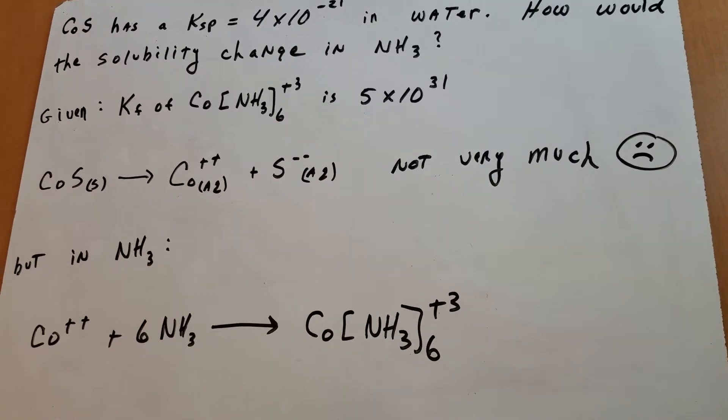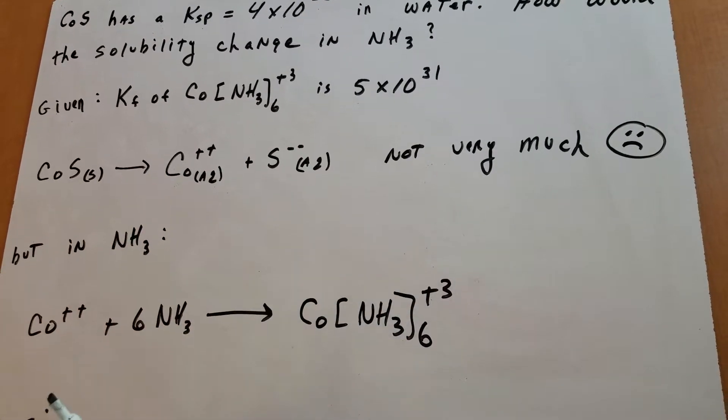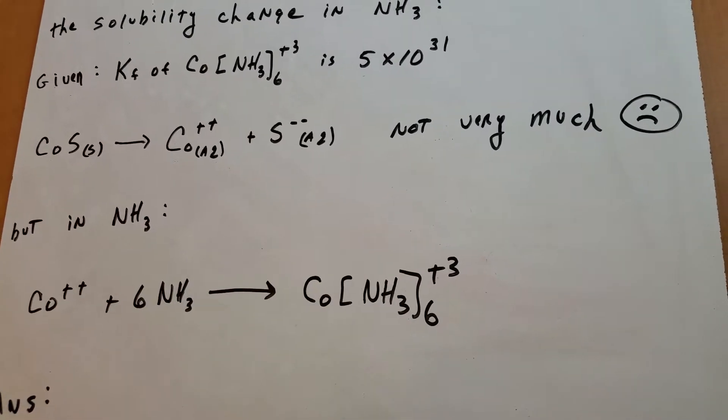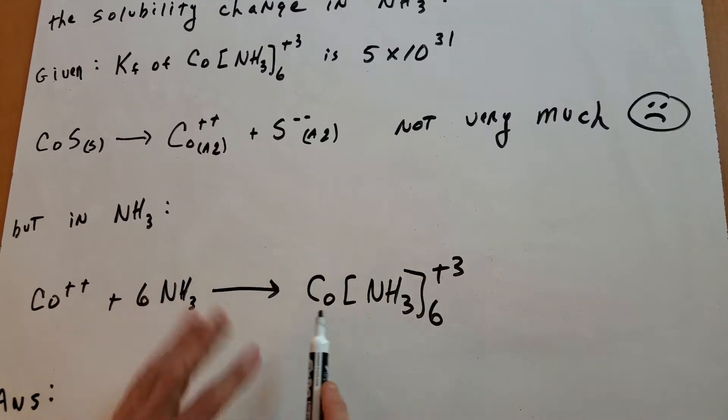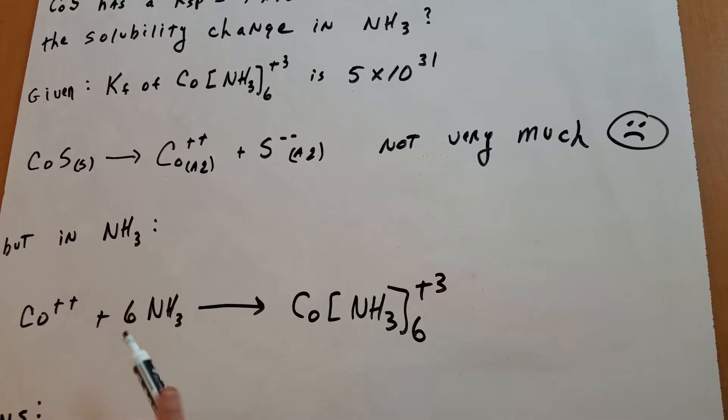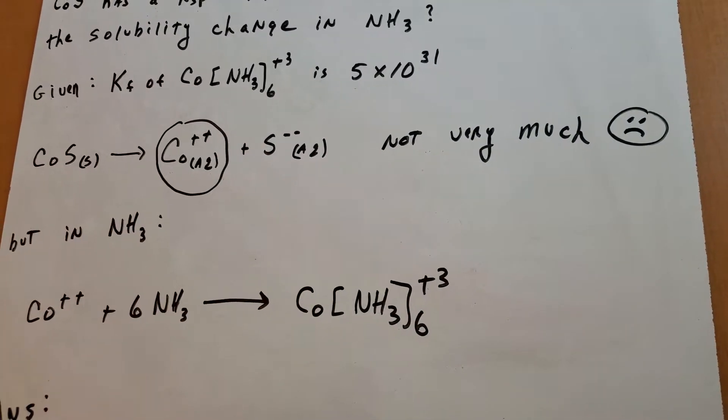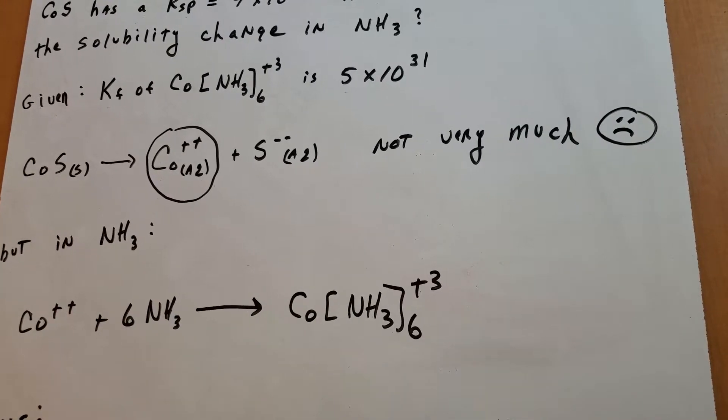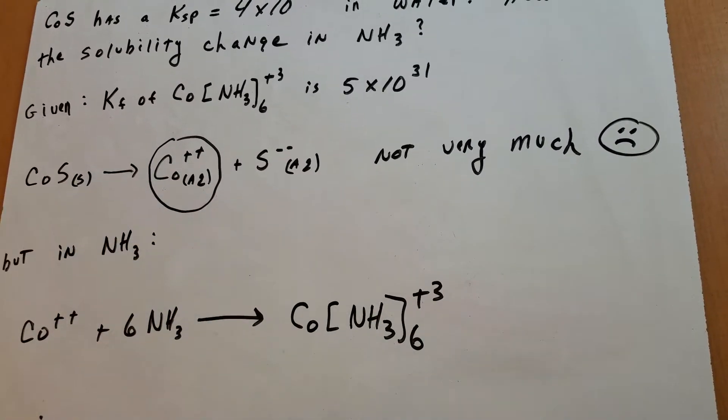Now, I want you to look at what's going to happen. If you put it in ammonia, you would have the reaction, again, dissociating. But as you can see, cobalt is going to combine with ammonia, and we give you the KF. So, that means that this reaction is going to be extremely favorable. So, what's happening here is that the ammonia is going to be removing the cobalt ion. And when it removes the cobalt ion, it's going to combine with it to form the complex ion. So, if you're constantly removing this, more of this is going to dissolve.